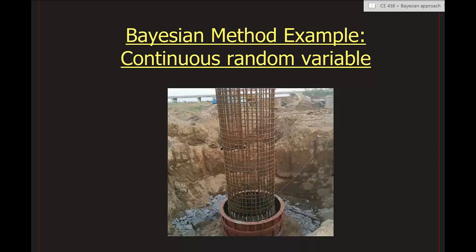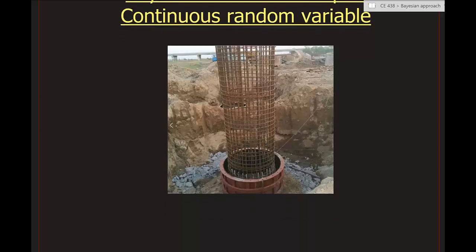Let us discuss an example of Bayesian method where the parameter is a continuous random variable, using a civil engineering example.